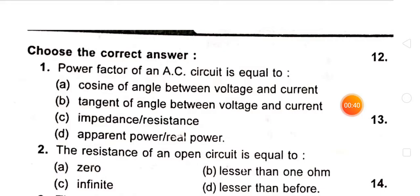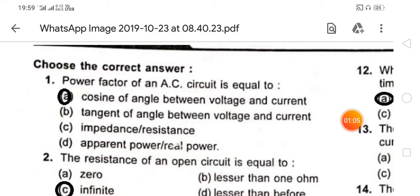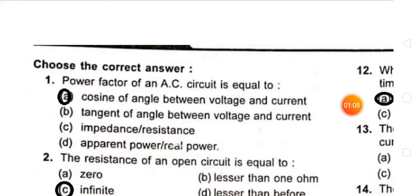First question: the power factor of an AC circuit is equal to cosine phi — the cosine of the angle between voltage and current.